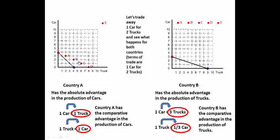Let's look at country B. If country B traded away two trucks, they would get one car. Notice that point is outside its own production capability.